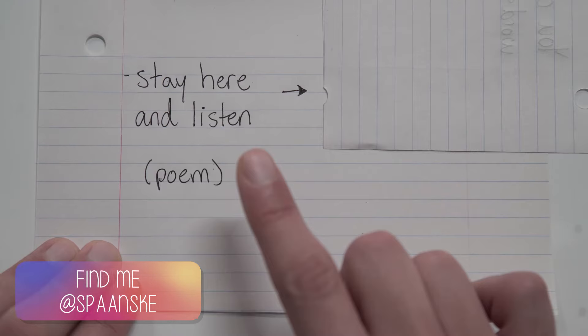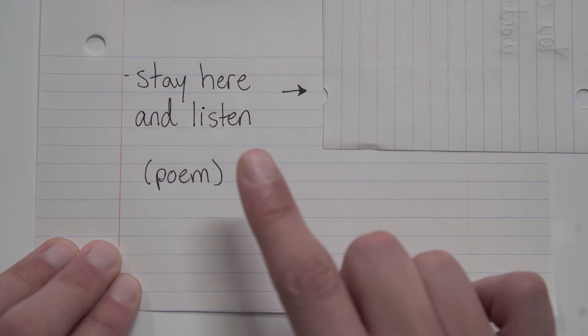All right, how about this poem title? The title of a single, individual poem. 'Stay Here and Listen.' Okay, so for starters, it's a poem, it's a shorter work, so we gotta be thinking about quotation marks. Then we look at our capitalization, and we find the word 'and' in there, and we know that that's a word that we should typically leave lowercase. So we capitalize the rest, and it looks like this.